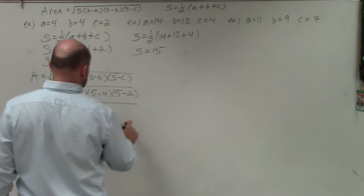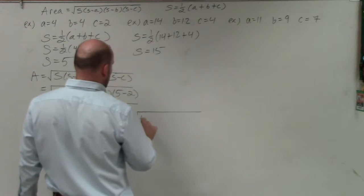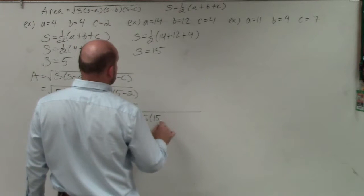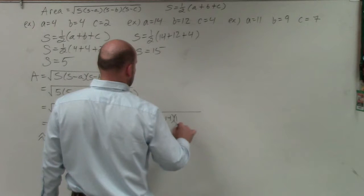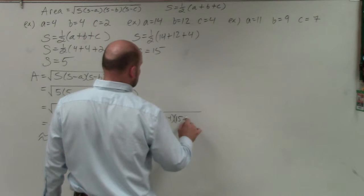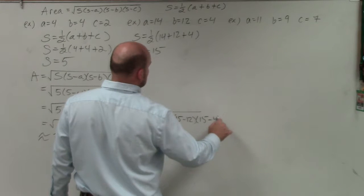And then let's kind of skip down a step, because I don't need to, I'm not going to show as much work here. So therefore, I have 15 times 15 minus a, which is 14, times 15 minus b, which is 12, times 15 minus c, which is 4.